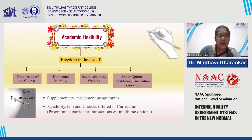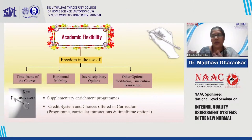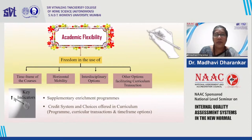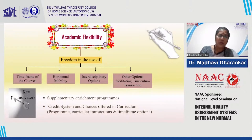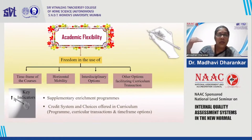You can see there are various key indicators of this flexibility — supplementary enrichment programs designed for students and a credit system. For example, we have the choice-based credit system, which also gives this kind of academic flexibility. At SNDT, we have this flexibility campus-wise in the choice-based credit system. All departments on a particular campus — we have three campuses — each brings in one course which can be taken up by students from other departments, giving learners a lot of flexibility to learn something from a different domain than the one in which they are getting their master's degree.